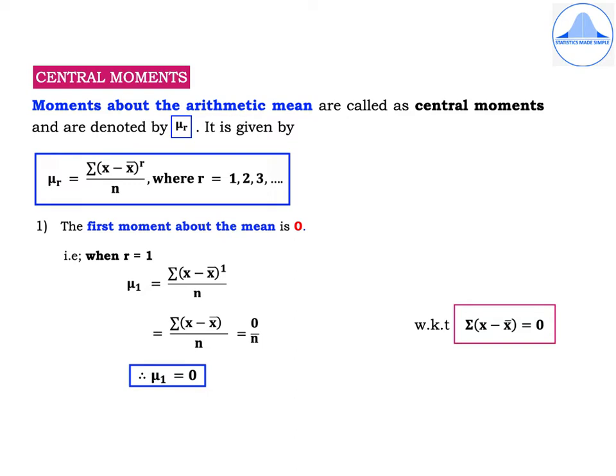The second type of moments are central moments. Moments about the arithmetic mean are called central moments and are denoted by μr. The formula is μr = Σ(x − x̄)^r / n, where r takes the values 1, 2, 3, and so on. Central moments are important.